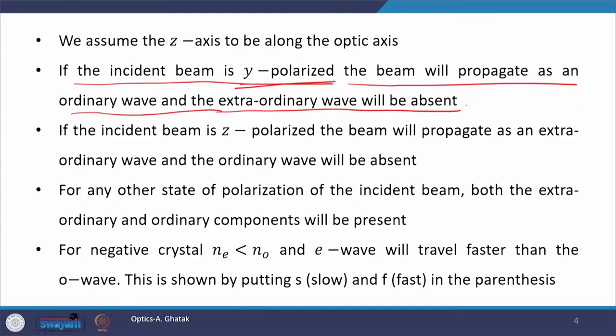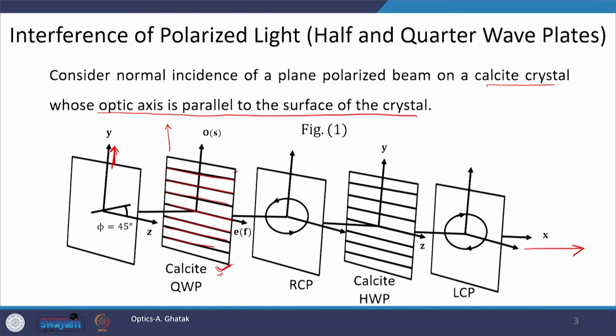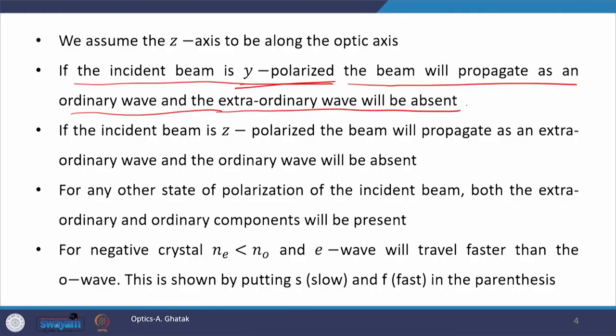Similarly, if the incident beam is z-polarized, then the direction of polarization will be along the optic axis while being perpendicular to k, the direction of propagation along the x-axis. This polarization is also in the plane formed by the optic axis and the k vector. Therefore, a z-polarized beam will behave as an E wave in the calcite crystal, and there will not be any ordinary wave.